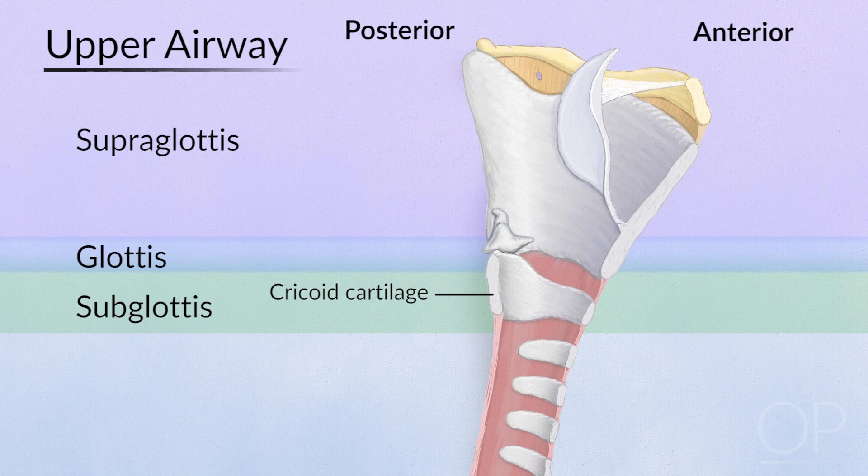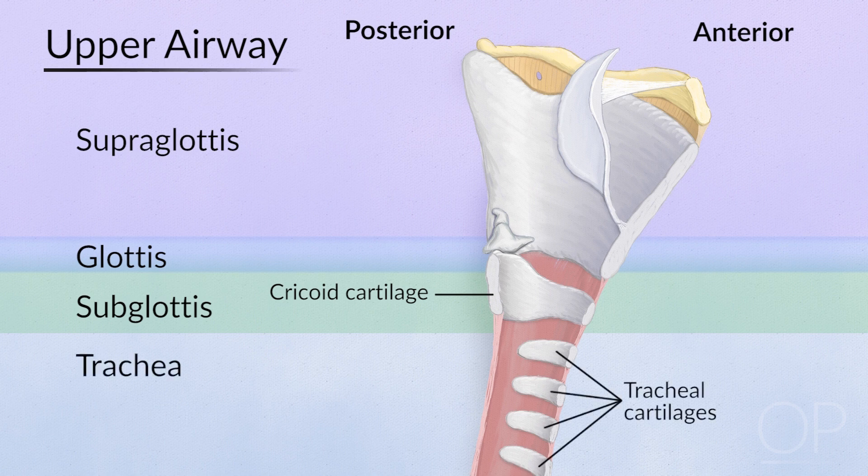The subglottis is the only part of the airway that is made of a complete cartilaginous ring, called the cricoid cartilage. The trachea is made of a series of U or C-shaped cartilages.